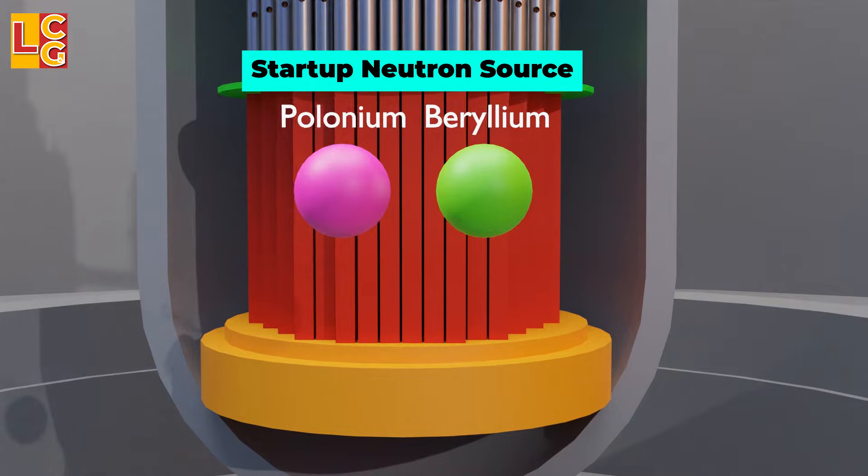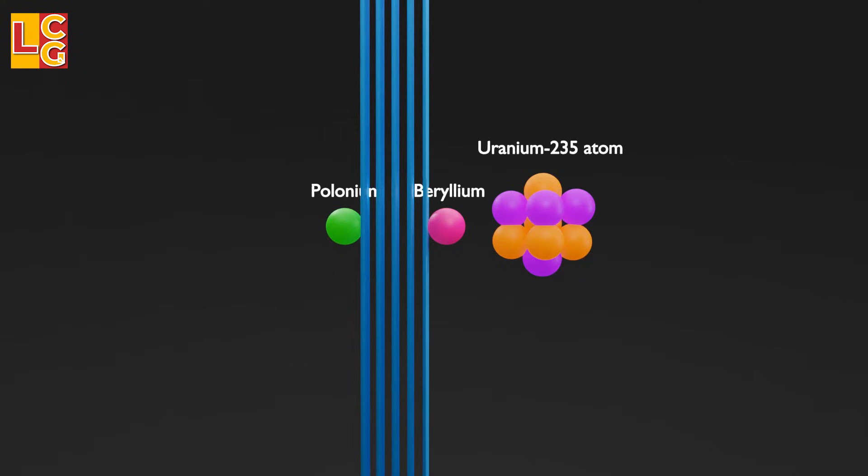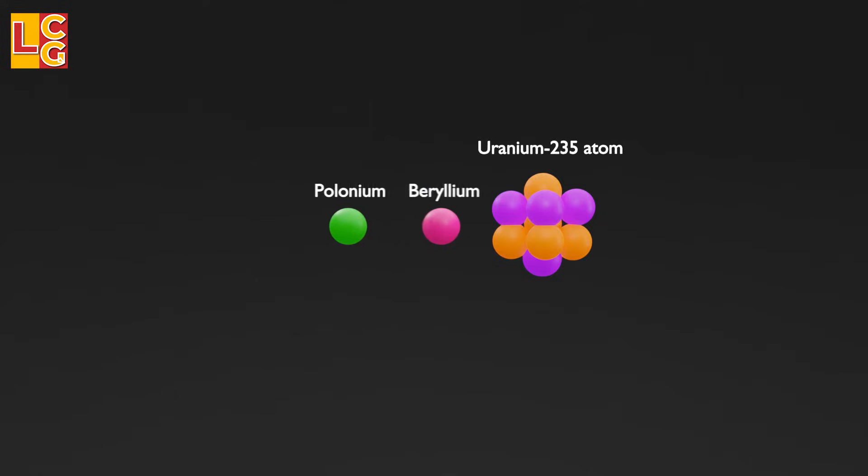the core is started by using a start-up neutron source like the combination of polonium and beryllium. These metallic elements are inserted into the core. When the control rods are lifted and these metallic elements mix together, they release a burst of neutrons, therefore starting the nuclear fission of the uranium.